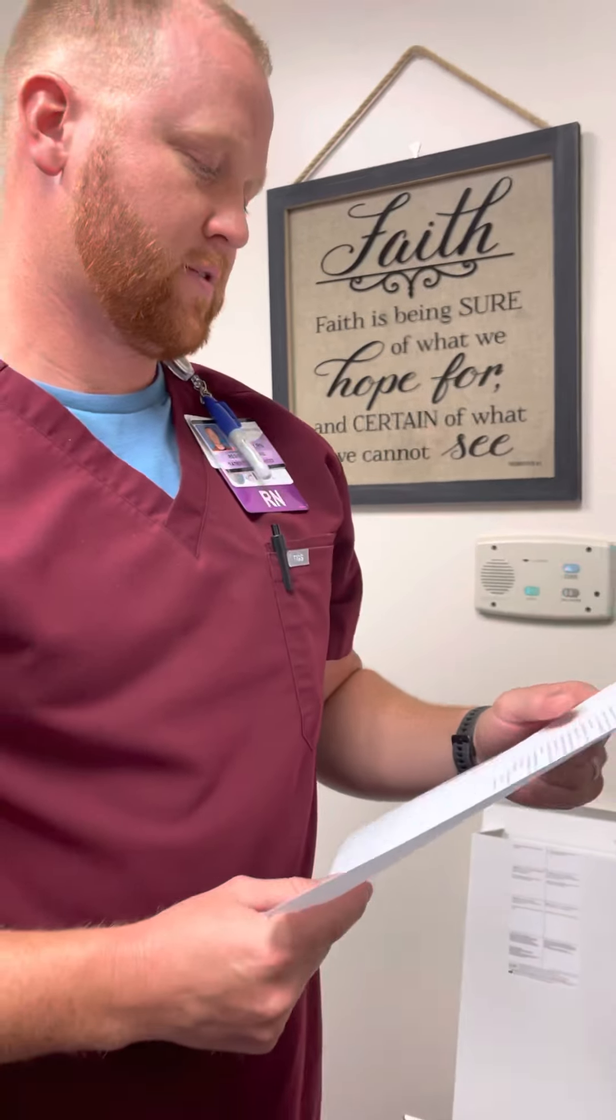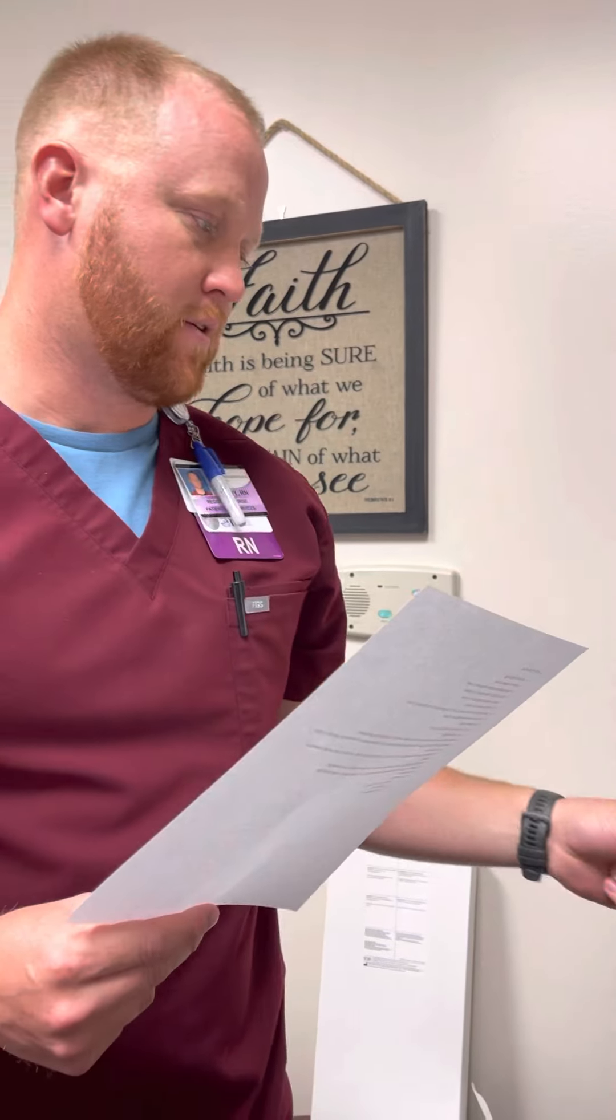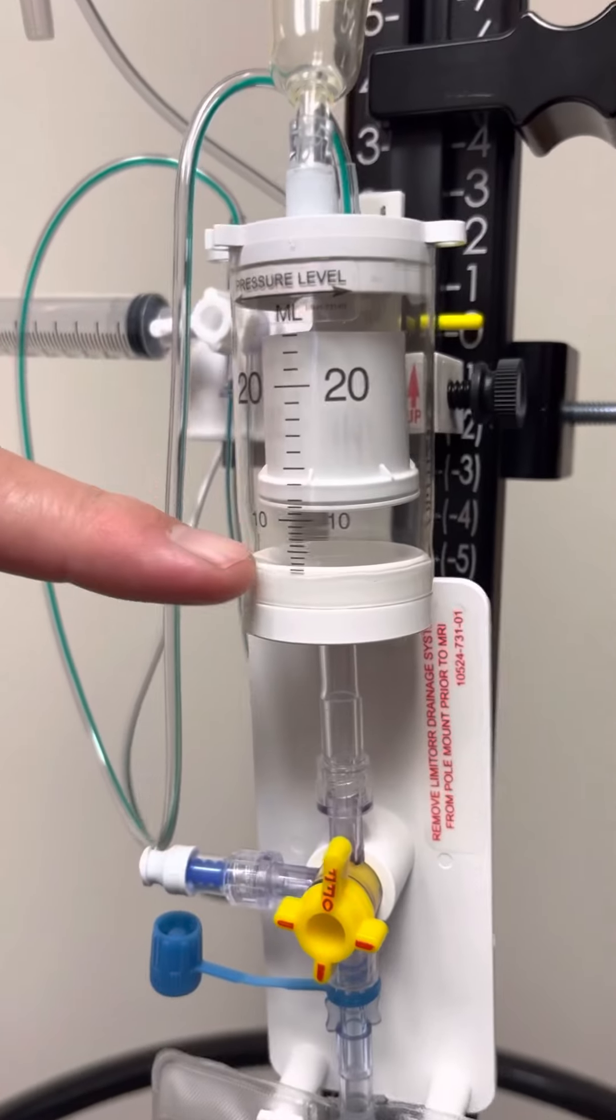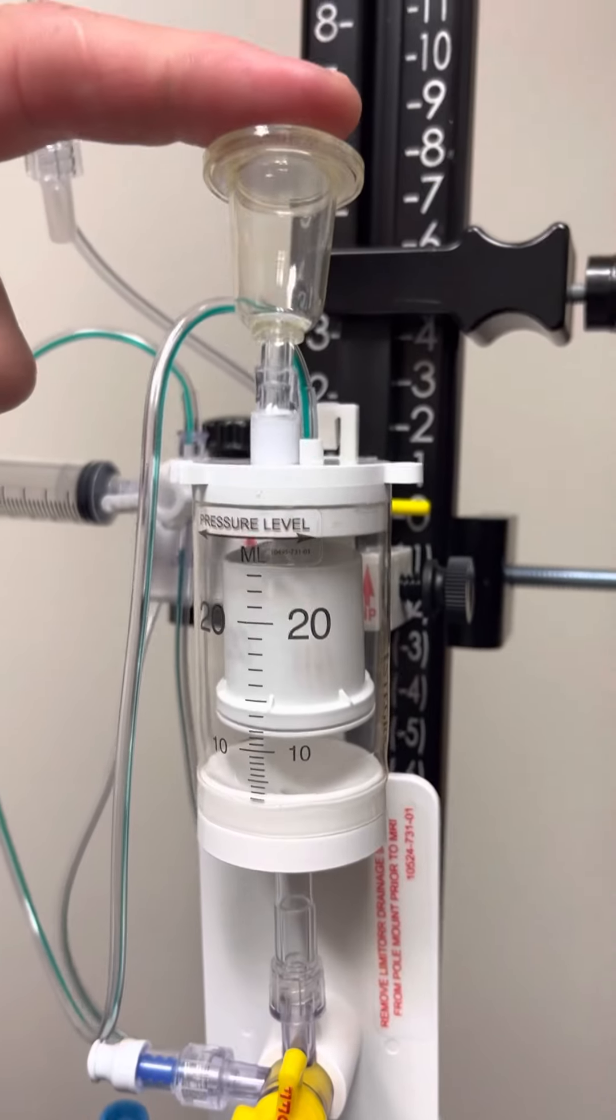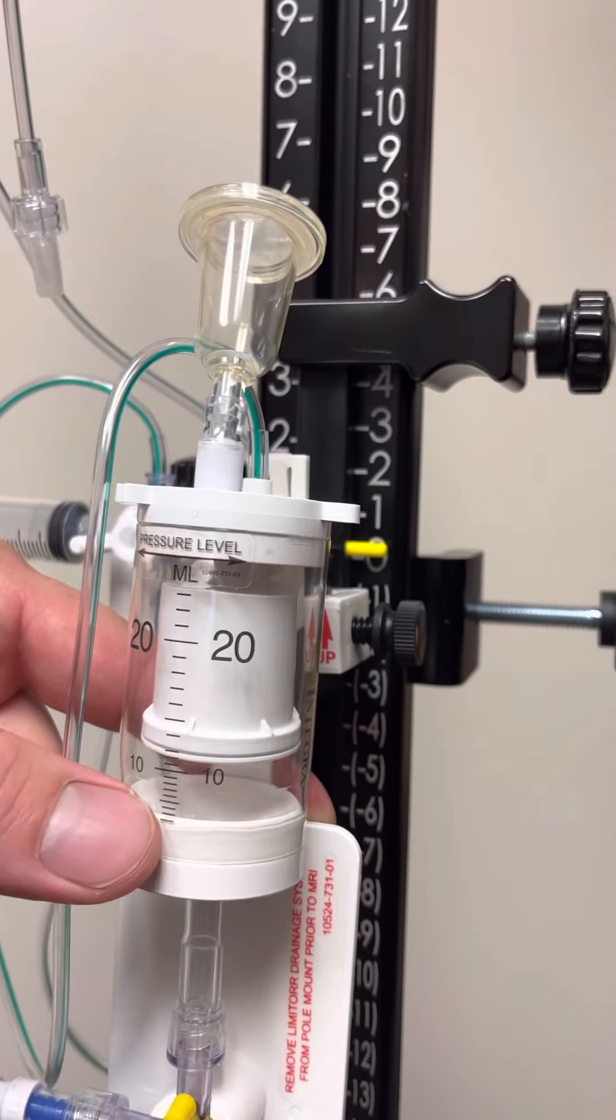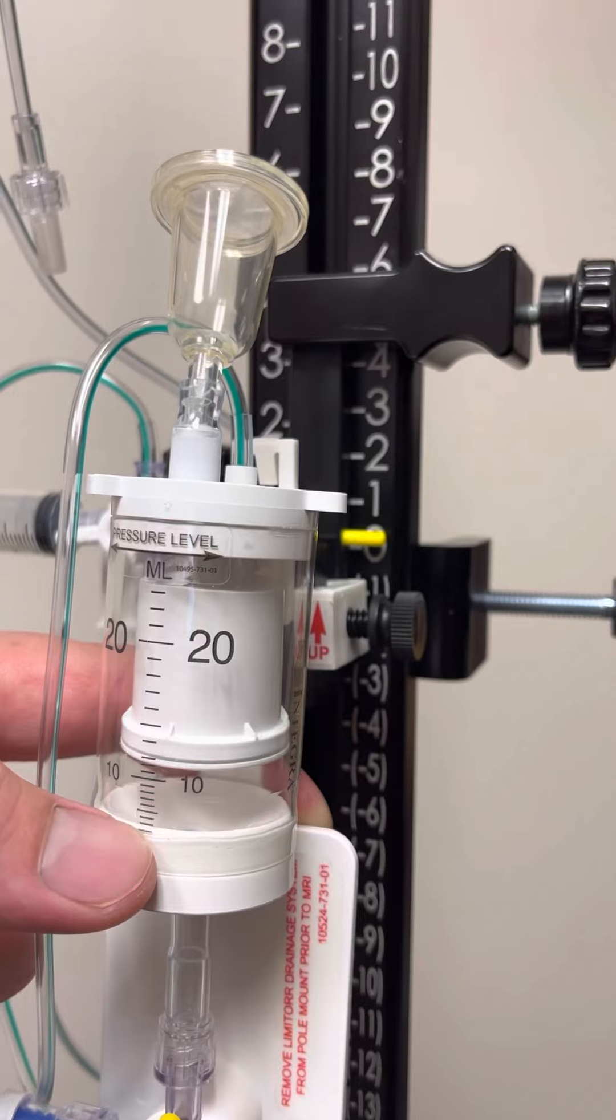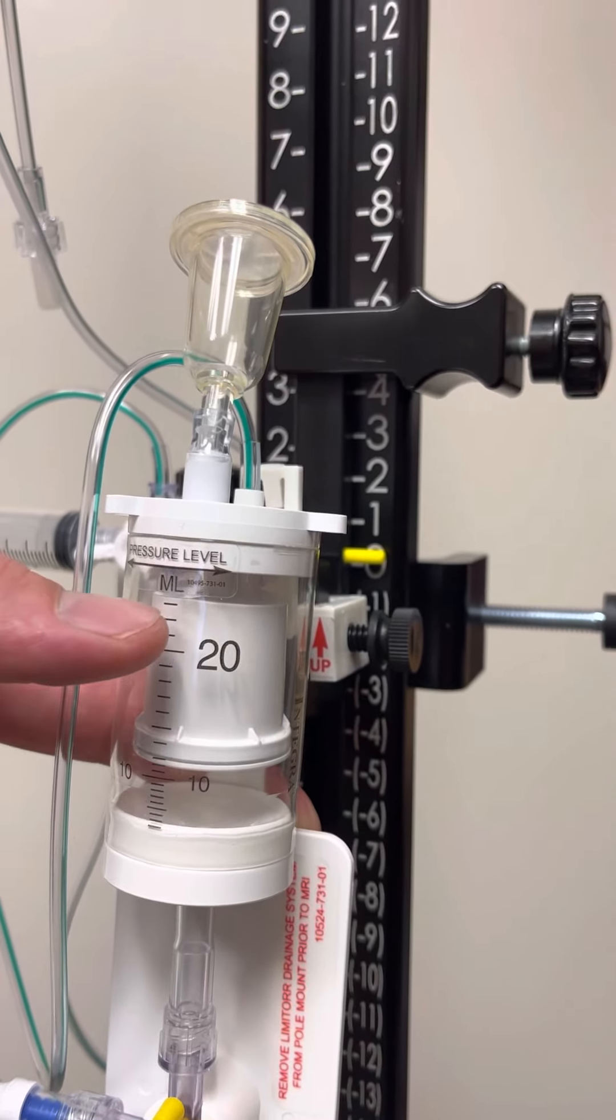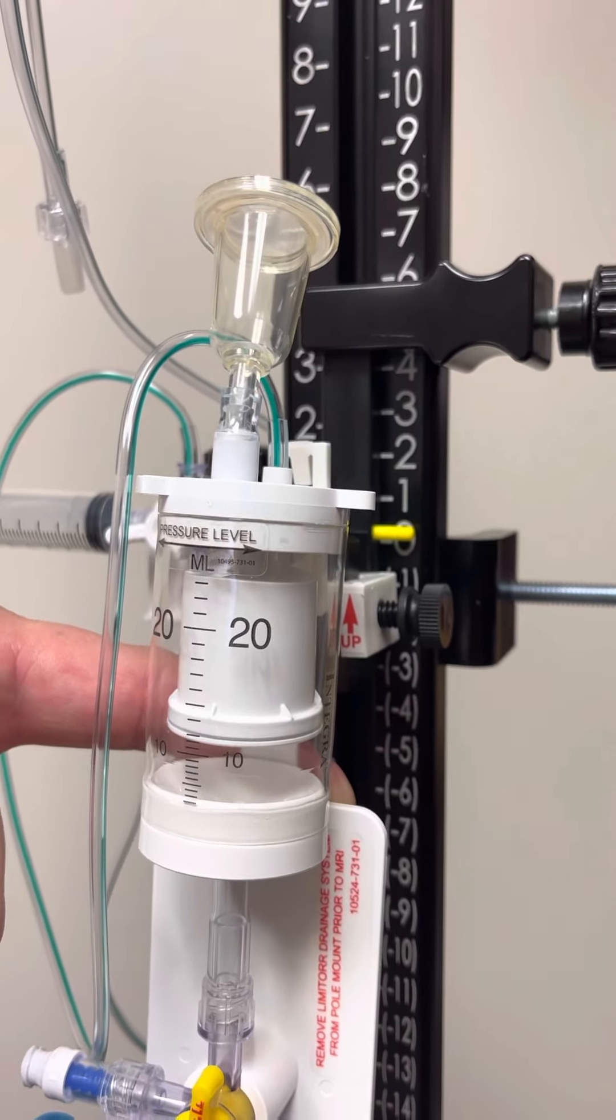Okay, a few key points for the lumbar Limitor drain itself. You will have a specific order of how much CSF to drain per hour. With this Limitor device, if your order is to drain 10 cc's, then you would need to prime this burette up to 13. That would allow it to go up to the maximum amount of 23, which would give you your 10 cc output.